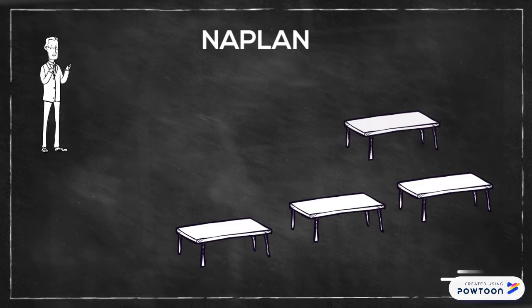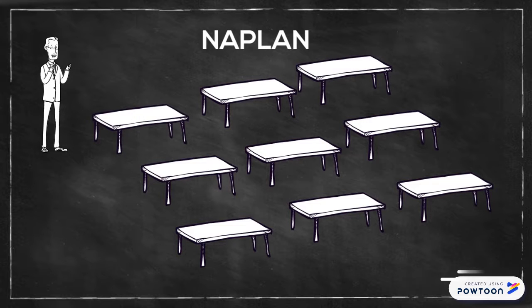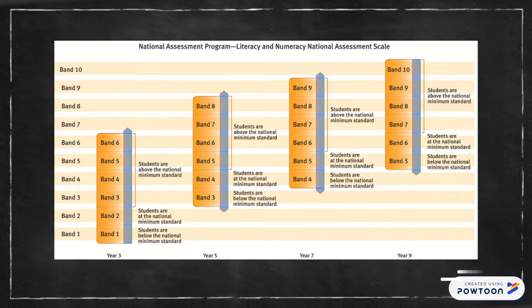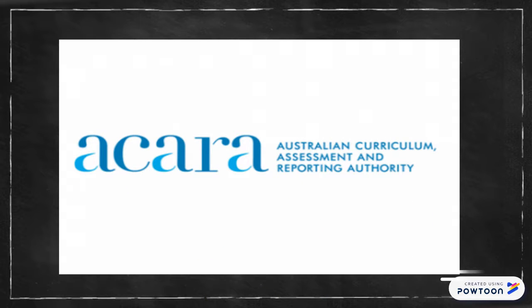The tests are conducted in similar controlled environments, ensuring all students are subjected to the same environment to confirm unified and unbiased results. The results provide data and information on students' performances in literacy and numeracy to ascertain if students are achieving the national minimum standards as outlined by the Australian Curriculum Assessment and Reporting Authority, or better known as ACARA.